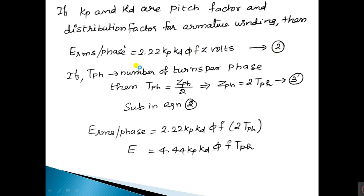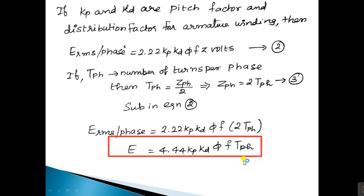If T is the number of turns per phase, then T_phase = z_phase/2, so z = 2T. Substituting into the equation: E = 2.22·kp·kd·φ·f·(2T_phase) = 4.44·kp·kd·φ·f·T_phase. This is the final EMF equation of the alternator — a very important formula on which university exam problems are based.